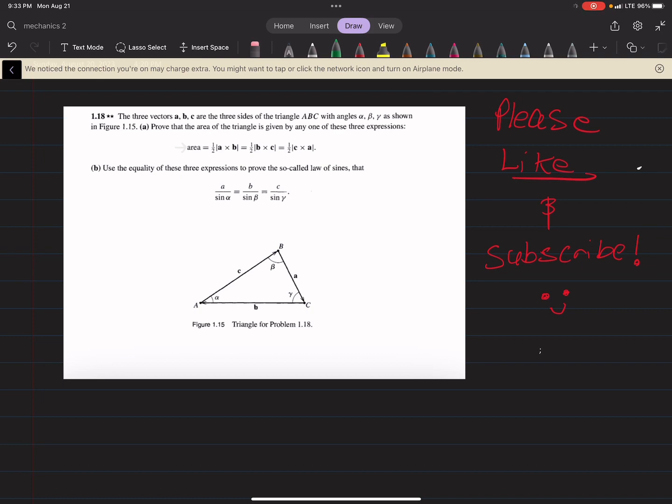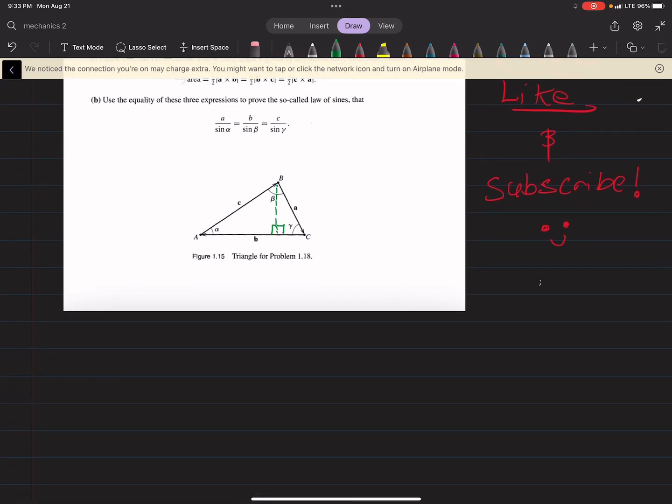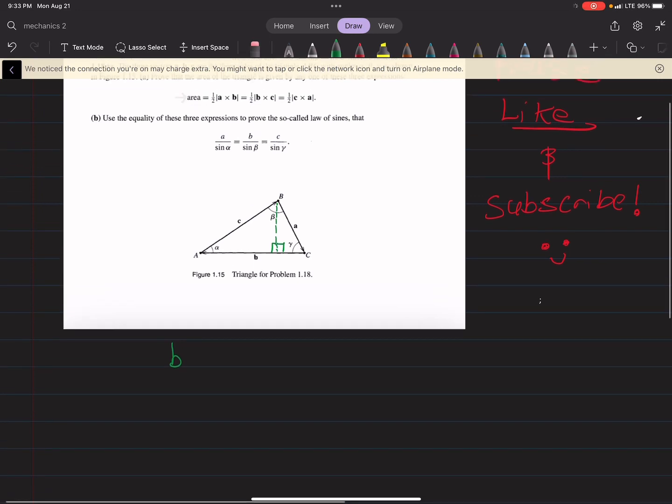The best way to do this is to drop a perpendicular here and create two right triangles. And what we'll see is B cross C, the magnitude of that cross product, which is what we're looking at here, is the magnitude of B, magnitude of C, sine of the angle between them, which is sine alpha.